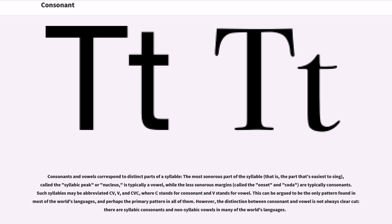Consonants and vowels correspond to distinct parts of a syllable. The most sonorous part of the syllable, that is, the part that's easiest to sing, called the syllabic peak or nucleus, is typically a vowel, while the less sonorous margins, called the onset and coda, are typically consonants. Such syllables may be abbreviated CV, V, and CVC, where C stands for consonant and V stands for vowel.